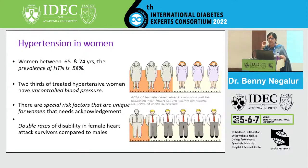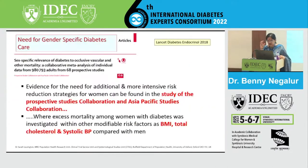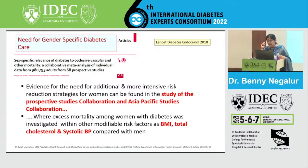At every stage, the impact of diabetes is much higher in women compared to men, and therefore there is a need for gender-specific diabetes management. A collaboration between the Prospective Studies Collaboration and the Asia Pacific Studies Collaboration conducted a meta-analysis of individualized data from more than 900,000 adults across 68 prospective studies, finding evidence of excess mortality among women with diabetes compared to men, even after adjusting for BMI, total cholesterol, and systolic blood pressure.